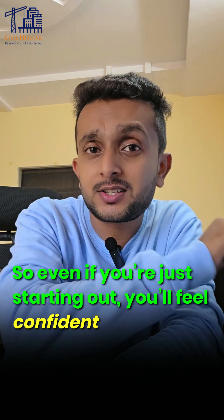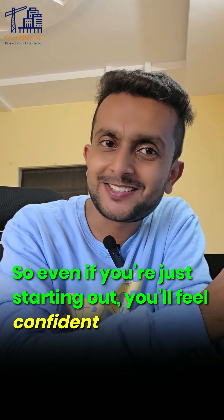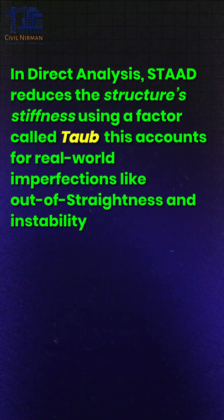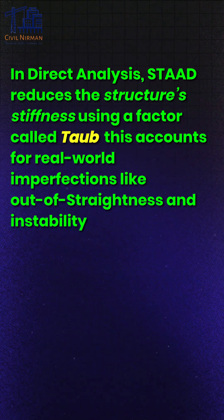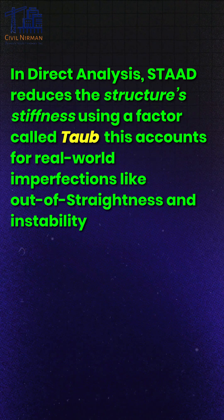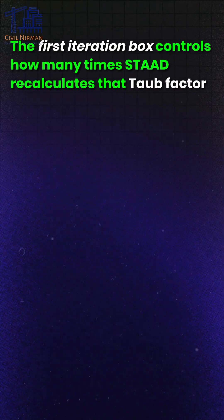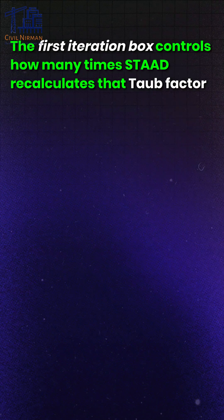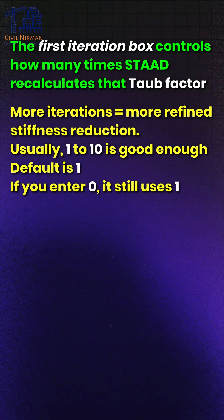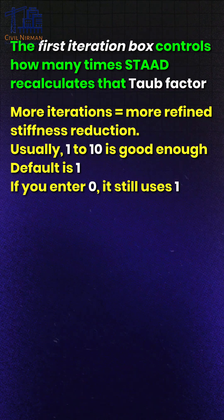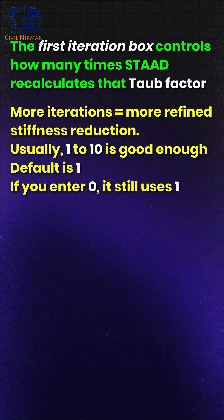Even if you are just starting out, you'll feel confident. In Direct Analysis, the software reduces structural stiffness using a factor called tau-b. This accounts for real-world imperfections like out-of-straightness and instability. The first iteration box controls how many times that tau-b factor is recalculated — more iterations means more refined stiffness reduction. Usually one to ten is sufficient, but the default is one, and if you enter zero it still uses one.